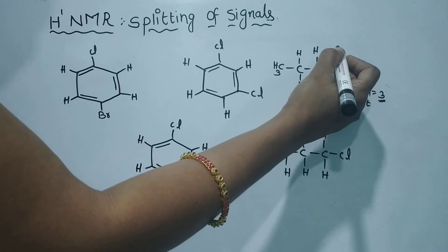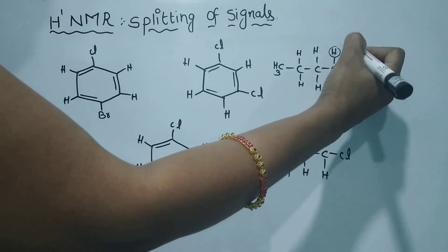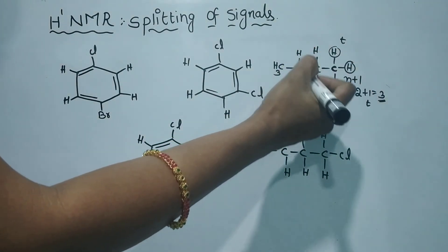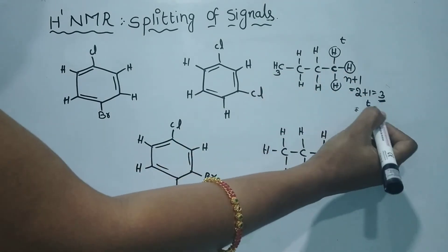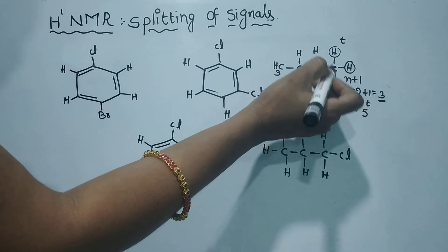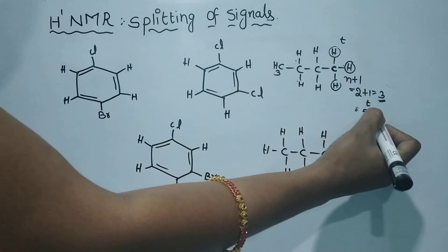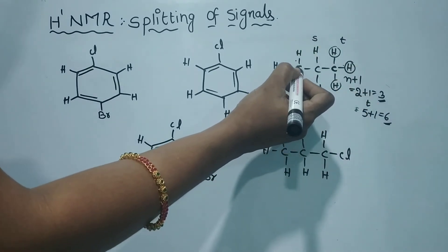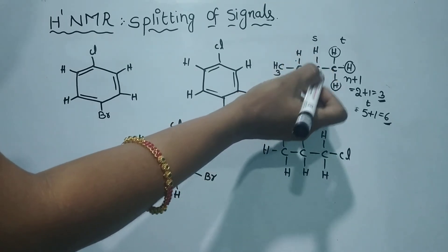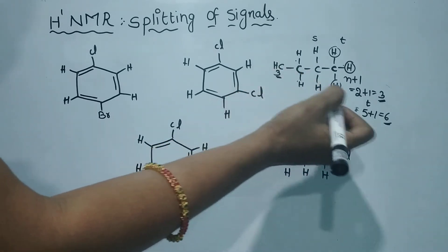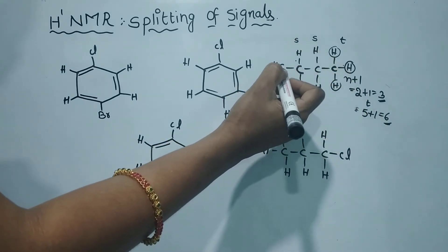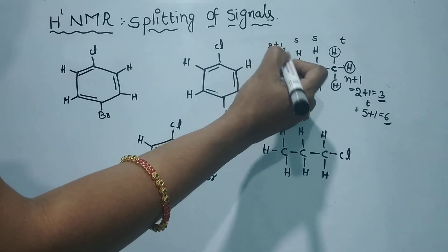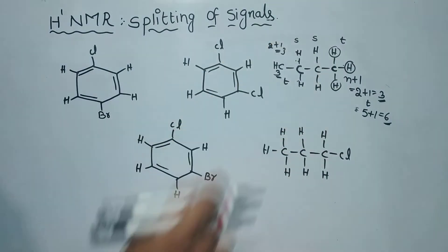For the middle 2 hydrogens, the adjacent carbons have 3 and 2 hydrogens respectively: 3 plus 2 equals 5, so 5 plus 1 equals 6 — that is a sextet. For the next carbon with 2 hydrogens, the adjacent carbon has 2 hydrogens: 2 plus 1 equals 3 — that is a triplet.